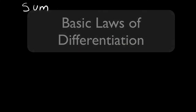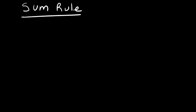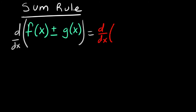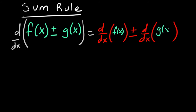Let's look at a couple more laws about the sum rule for derivatives. The sum rule says that if you have two functions, f of x and g of x, and you're either adding or subtracting those functions and you want to find the derivative of that sum, you can take the derivative of the first one and then simply add or subtract the derivative of the second one.